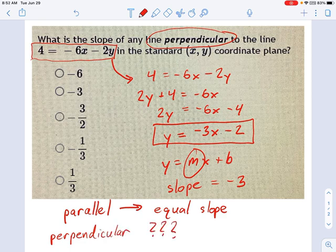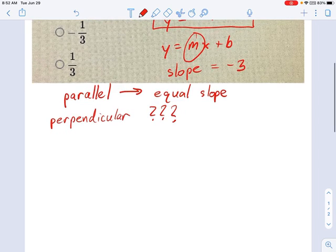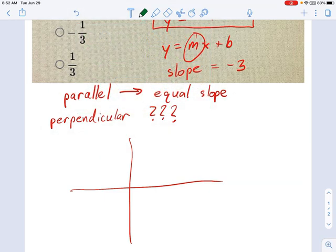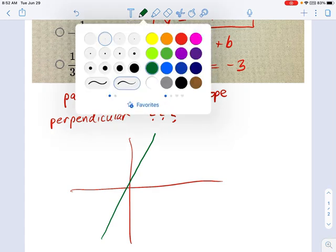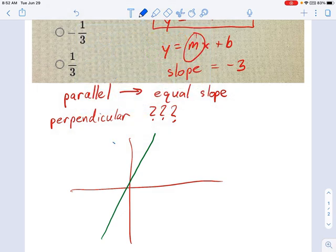Let's draw a graph here, and hopefully that will clear it up a little bit. Let's say I have my xy graph, and I've got a line, and you can see it's a very steep line right here. And I want to know what's the slope of a line perpendicular to it. Well, the slope of a line perpendicular will look like this.